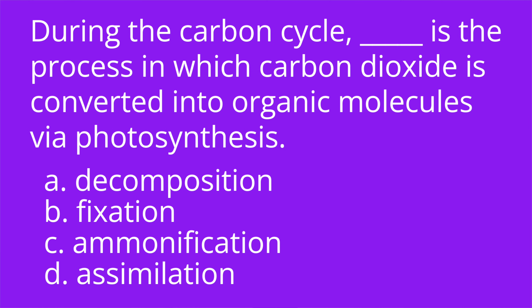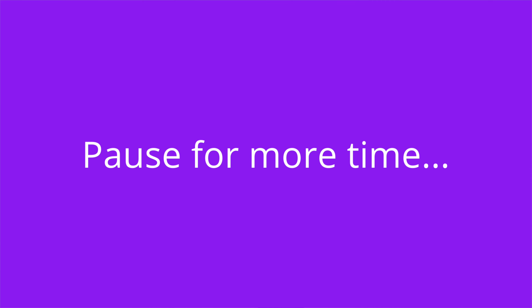During the carbon cycle, blank is the process in which carbon dioxide is converted into organic molecules via photosynthesis. A, decomposition. B, fixation. C, ammonification. D, assimilation. The answer is B, fixation.